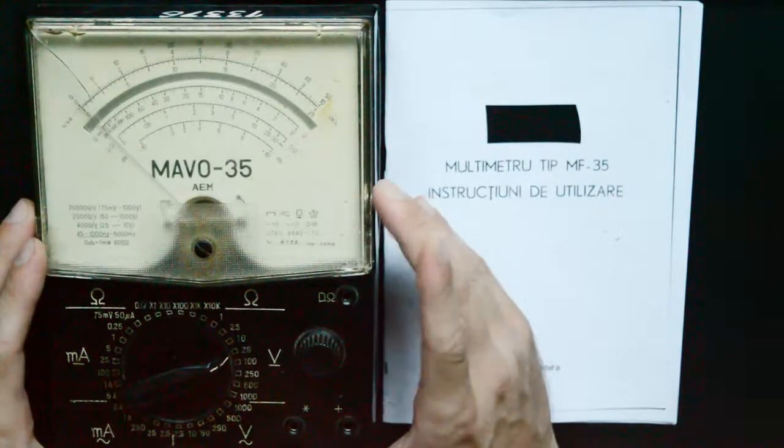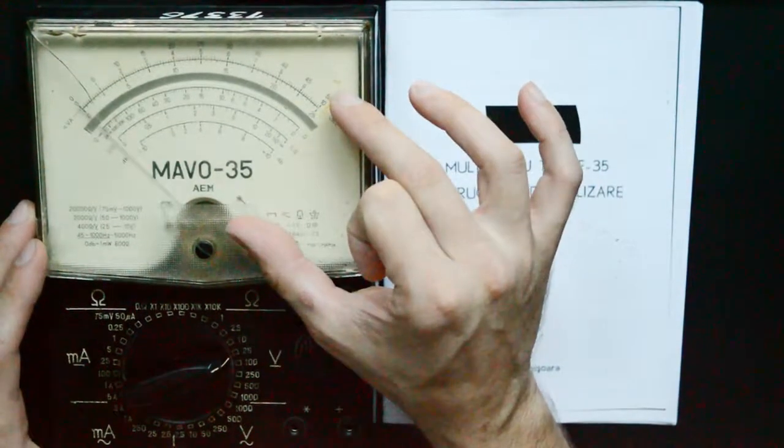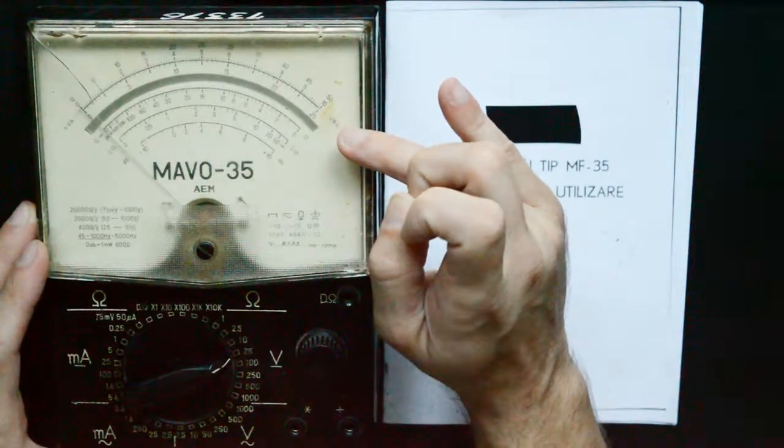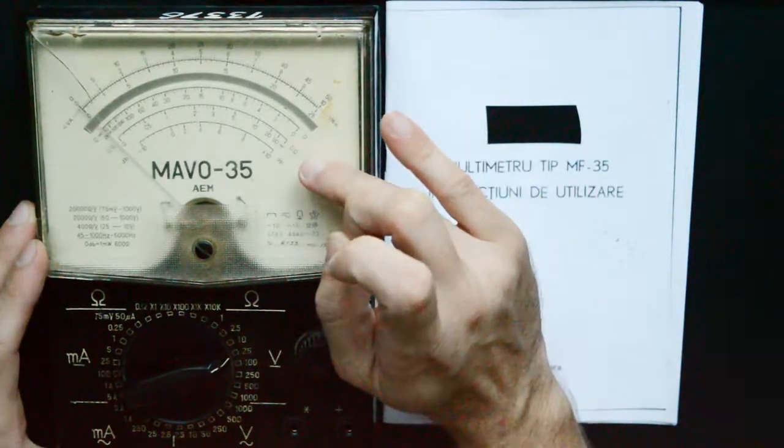Moving on, looking at the instrument itself, we see that it has multiple scales for the various measurements you want to do, like for example we have the volts and amps scale, and then we have the ohm scale.